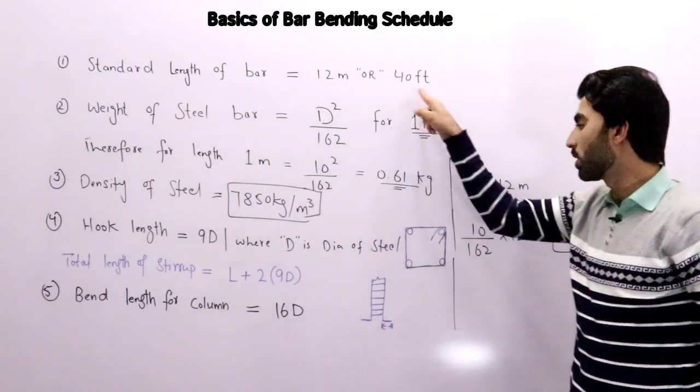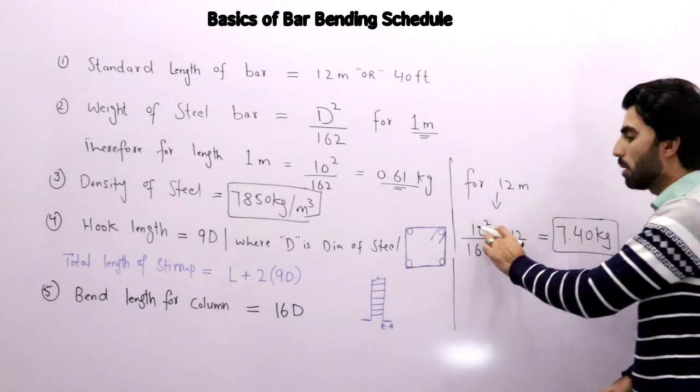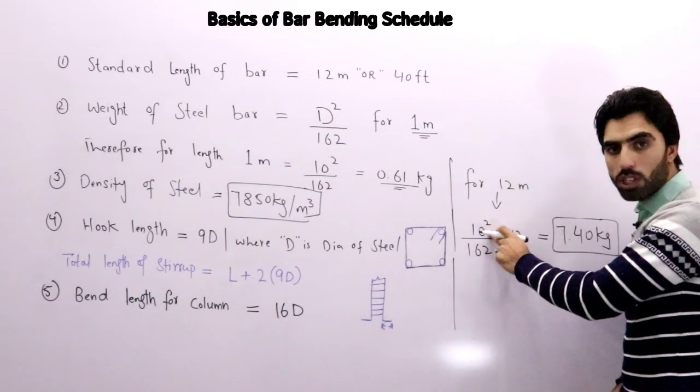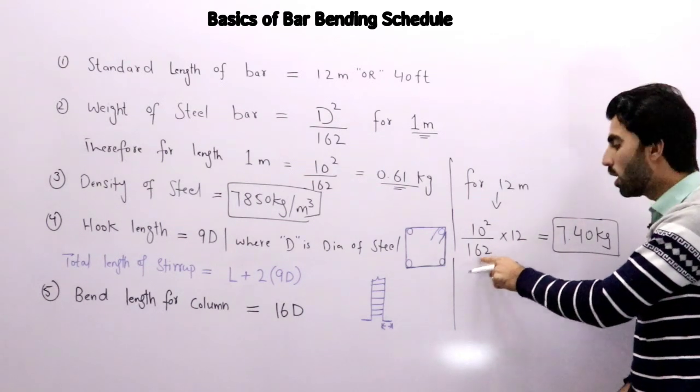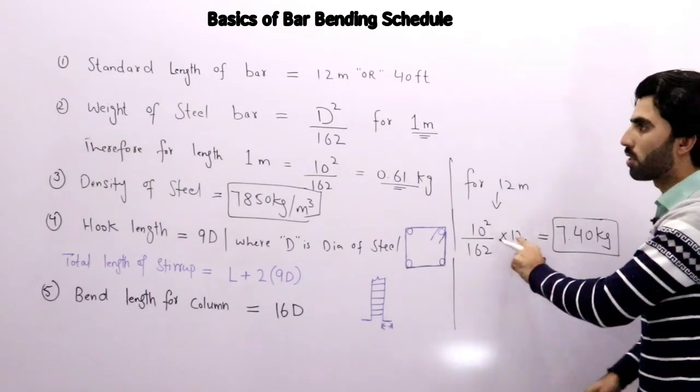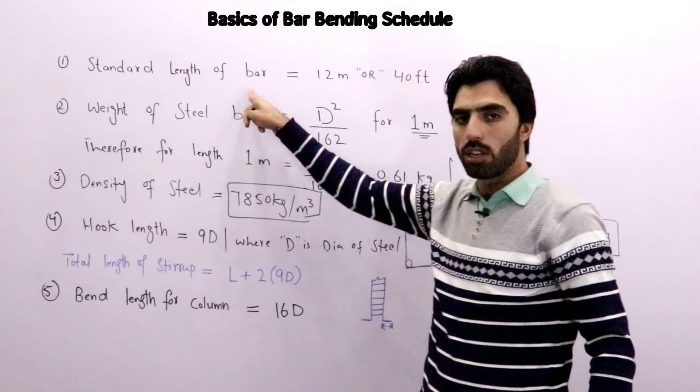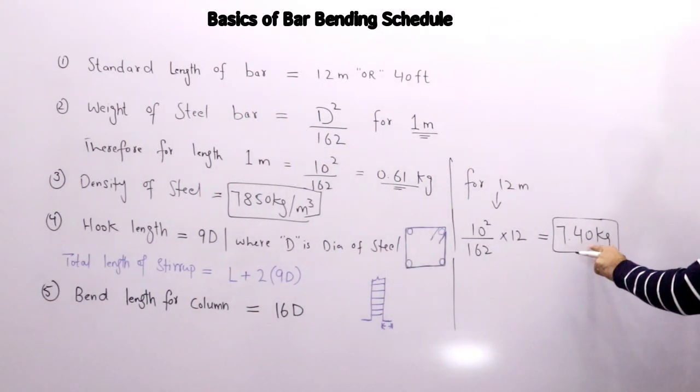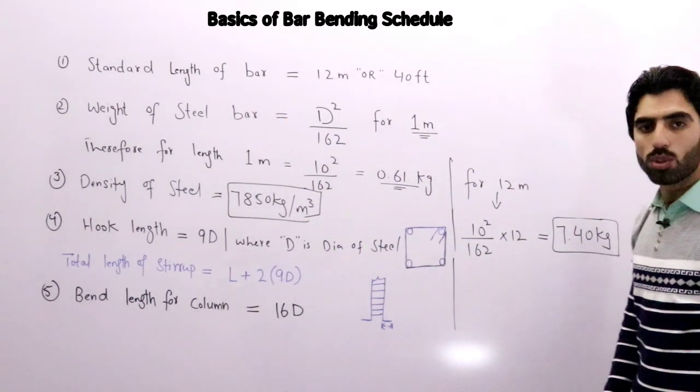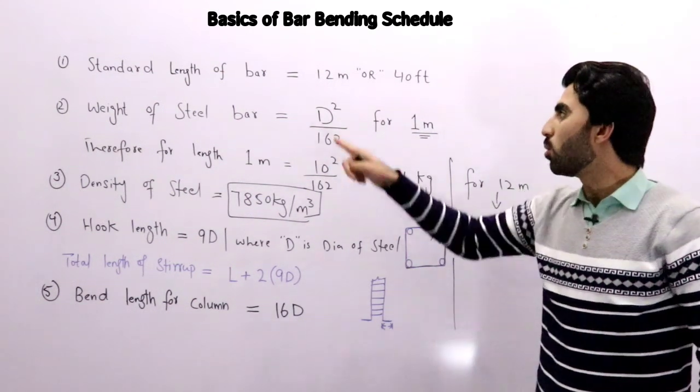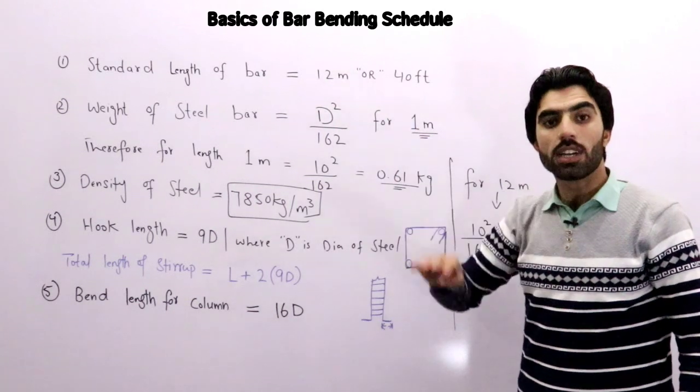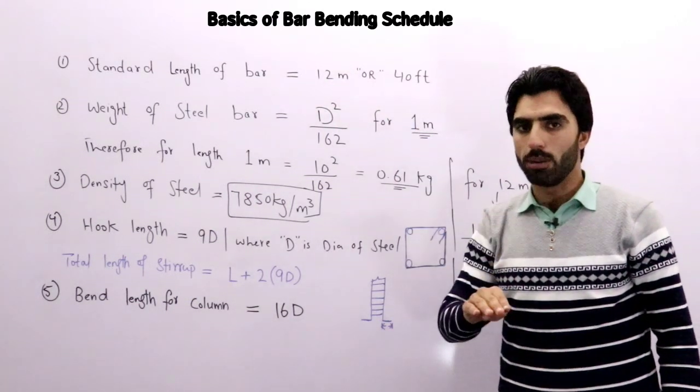Here you can see for 12 millimeter—because standard length of steel bar is 12 meter or 40 feet. Now the formula is same: 10 is the diameter of steel bar, so 10 squared divided by 162, and total length is 12 meter for standard length of steel bar, so it will give us 7.40 kg.